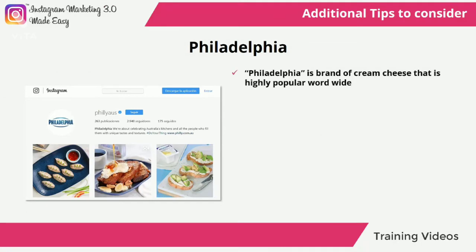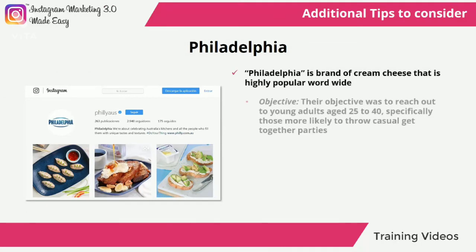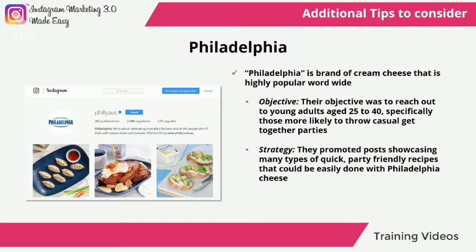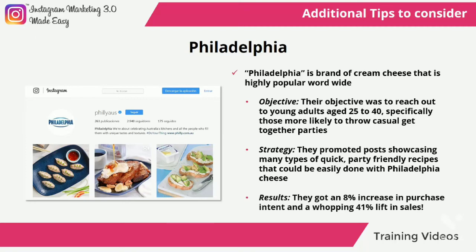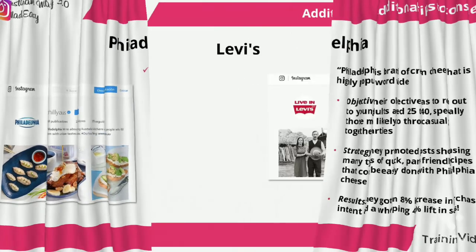Philadelphia — a brand of cream cheese that is highly popular worldwide. Their objective was to reach out to young adults aged 25 to 40, specifically those more likely to throw casual get-together parties. They promoted posts showcasing many types of quick, party-friendly recipes that could be easily done with Philadelphia cheese. Results: they got an 8% increase in purchase intent and a whopping 41% lift in sales.